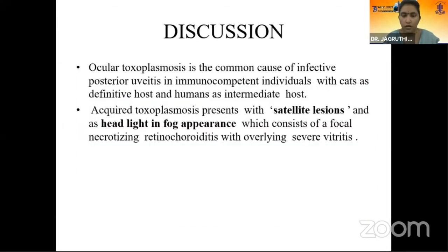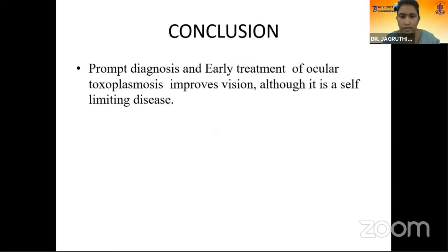Discussion. Ocular toxoplasmosis is a common cause of infectious posterior uveitis in immunocompetent individuals, with cats as the definitive host and humans as the intermediate host. Acquired toxoplasmosis presents with satellite lesions and has a 'headlight in fog' appearance, which consists of focal necrotizing retinochoroiditis with overlying severe vitreitis. Conclusion: prompt diagnosis and early treatment improves vision, although it is a self-limiting disease.